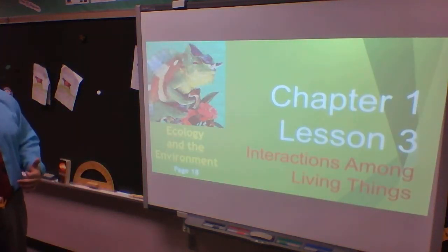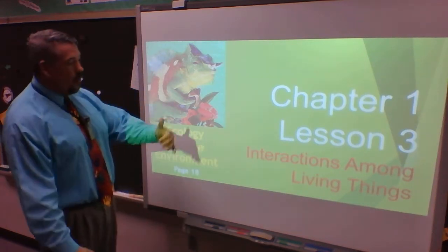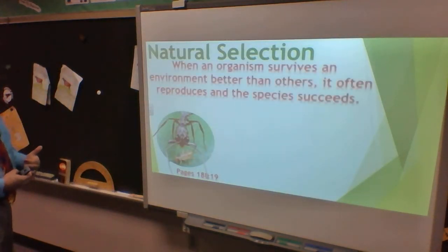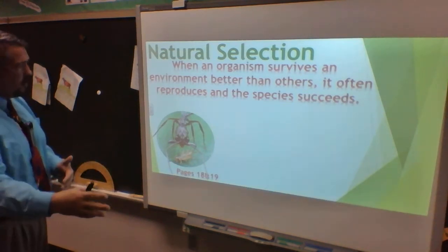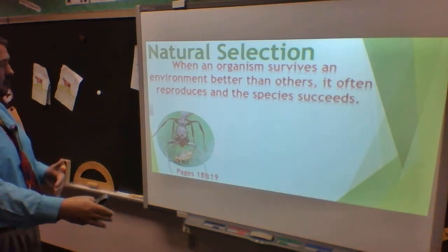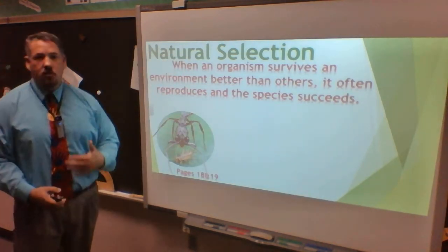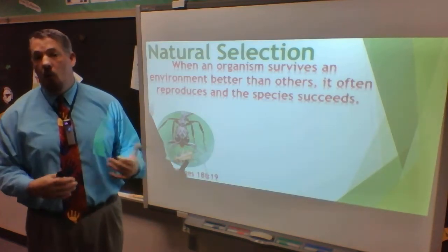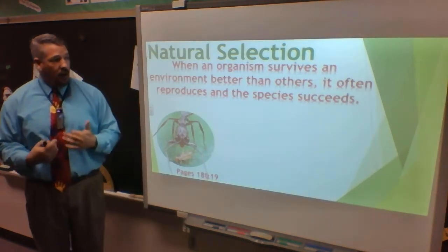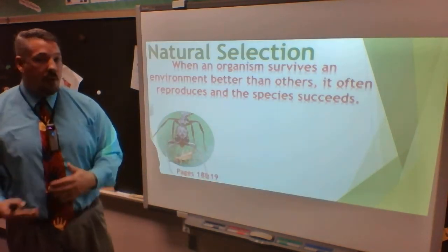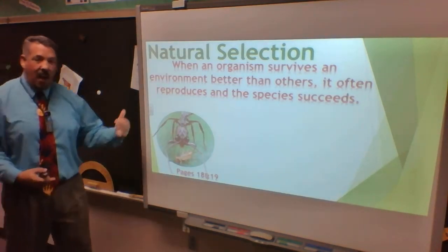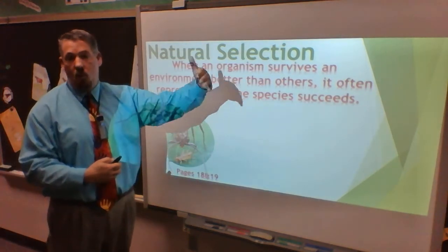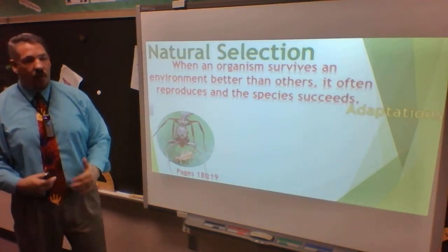Population is a huge limiting factor. That takes us into chapter one, lesson three, where we talk about how we interact with other organisms. When an organism survives an environment better than others, it often reproduces and the species succeeds — that's the definition of natural selection straight from your book. Natural selection means the top of the food chain usually survives and reproduces. Human beings are at the top, which is why our population continues to boom and explode — we survive and adapt.